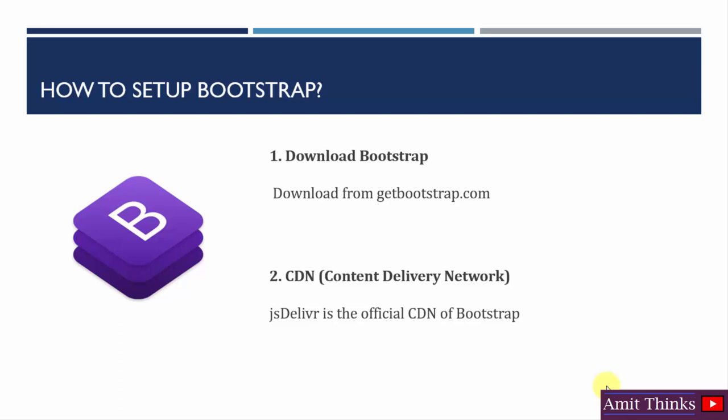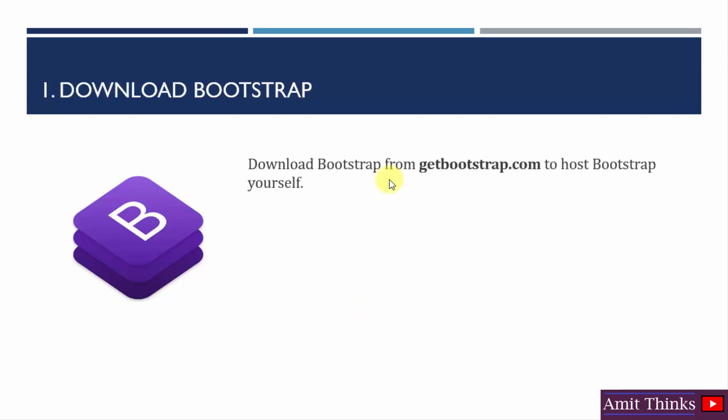To set up Bootstrap, you can either download it or use a CDN. If you download Bootstrap from the official website getbootstrap.com, you can host it on your own server. If you use a CDN — Content Delivery Network — you don't need to install or set up anything on your server. CDN fetches Bootstrap from a remote server and is generally considered faster than downloading Bootstrap.